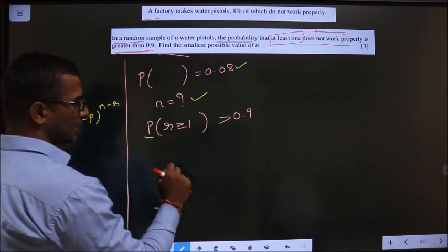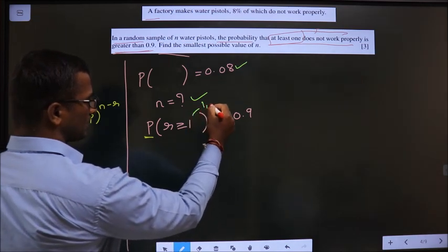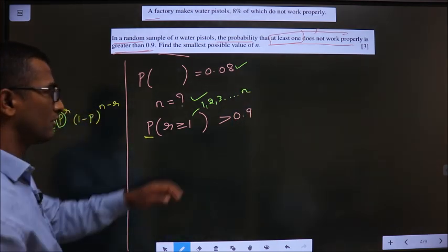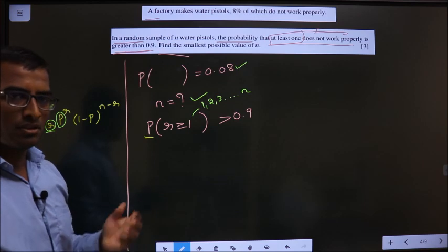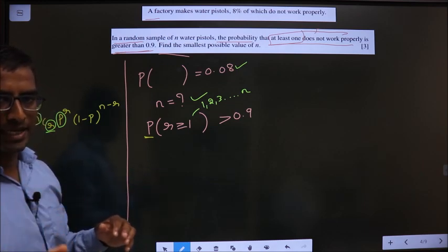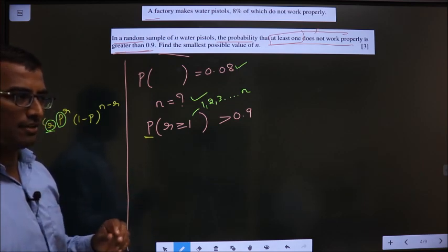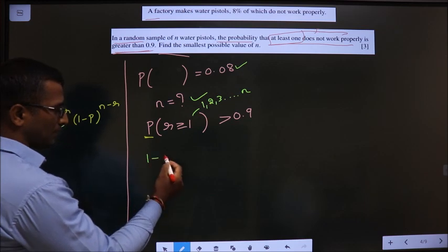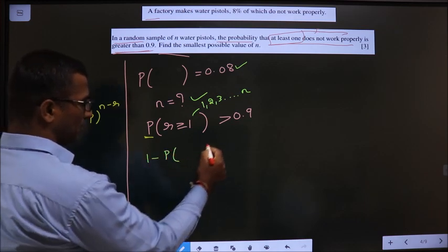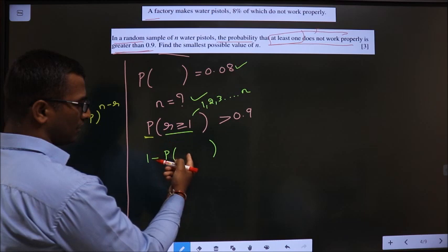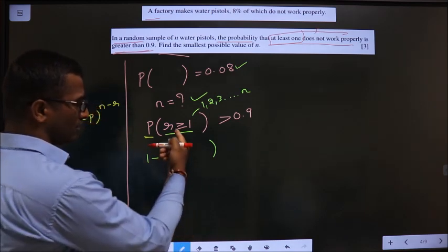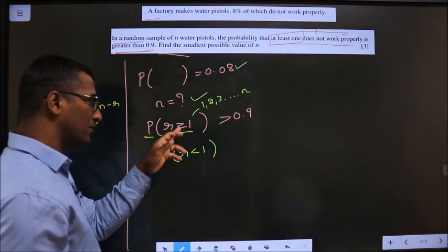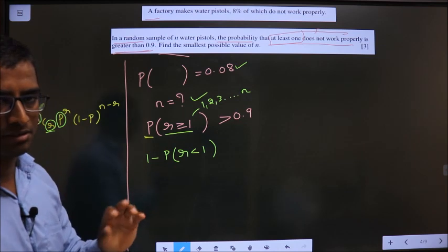So r is greater than or equal to 1 means r values will start from 1, 2, 3, so on up to n. So I get many values for r. So I should take a step to decrease the value for r. And that step is this one. I do 1 minus p of whatever condition you have here, here you should write opposite of it. So here greater than or equal to, so make it less than 1. Here equal to is present, so don't put equal to here.